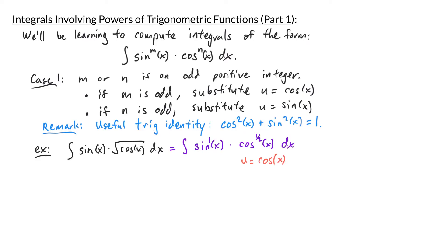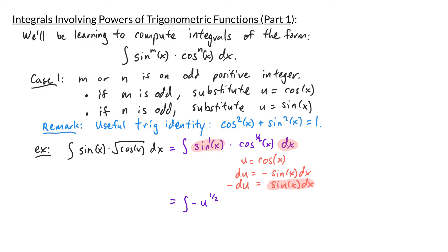Taking the derivative we get that du is equal to negative sine of x dx. Moving the negative sine to the other side we have negative du is equal to sine of x dx. Our substitution is going to work out nicely because we see sine of x dx in our original integral — we have a sine of x here and a dx here which we'll replace with negative du. When we make our substitution this becomes the integral of negative u to the one half power du.